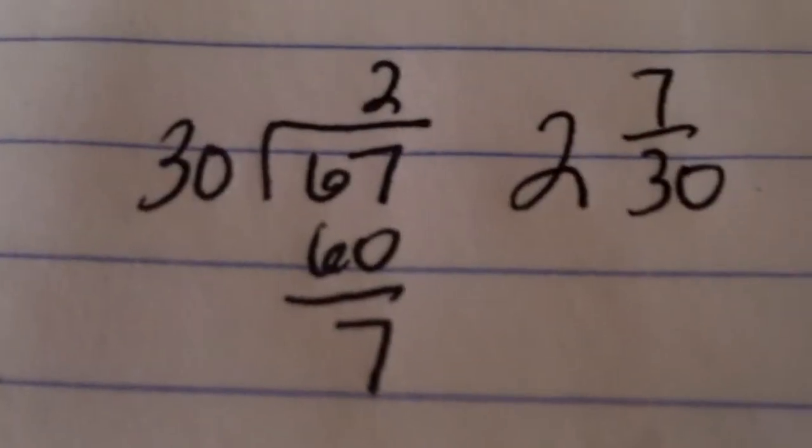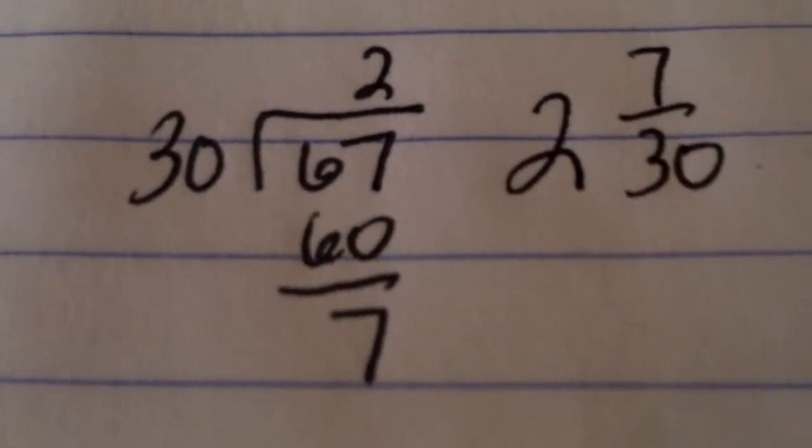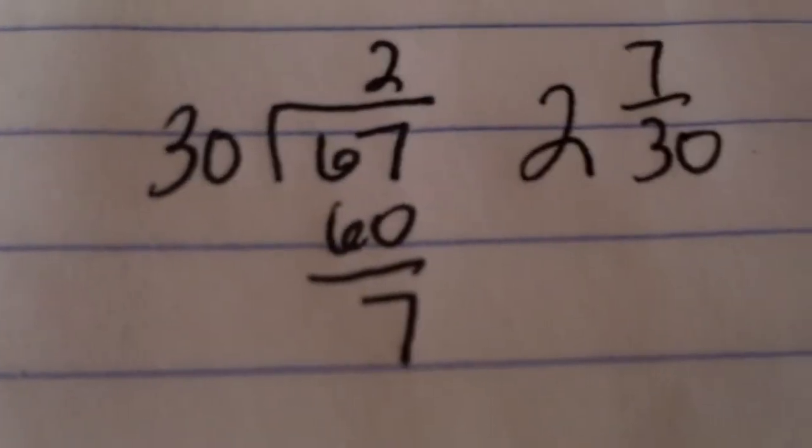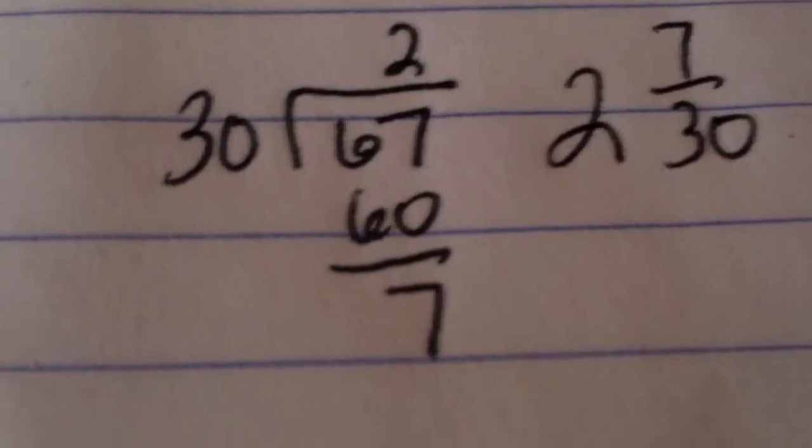And find that as a mixed number. That would come out to be 2, and again, remember, remainder over the divisor. So that just has the equivalent, just this little piece right there, just this little piece has the equivalent of 2 and 7 thirtieths.